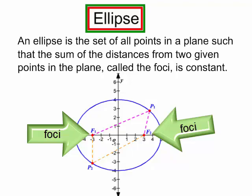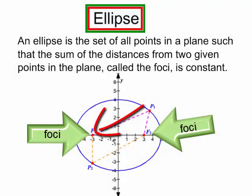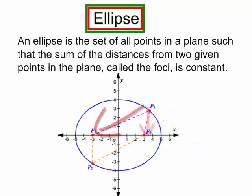In other words, I could take a point on the ellipse and find the distance from that point to one of the foci, add it to the distance from that point to another foci, and it will always be the same no matter which point I use on the ellipse.